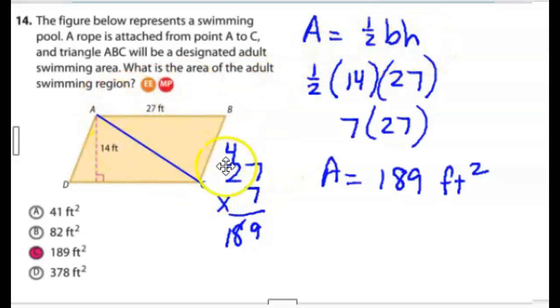And then we just fill in the information that we know. We know that the base is 27, so I wrote 27. And it could be in any order because this is multiplication, and the height is right here, it's 14. One-half times 14 is equal to 7, so we do 27 times 7, and we get 189 square feet is our answer, and so that's the answer choice over here.